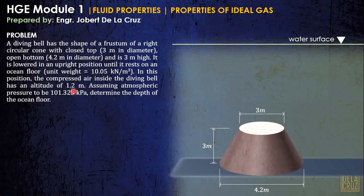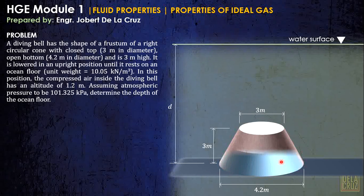In this position, the compressed air inside the diving bell has an altitude of 1.2 meters. This will be the depth of the ocean floor and it states that the compressed air inside this diving bell in this position has an altitude of 1.2 meters. Now, assuming the atmospheric pressure to be 101.325 kilopascal, determine the depth of the ocean floor. So we are required to calculate this depth here.